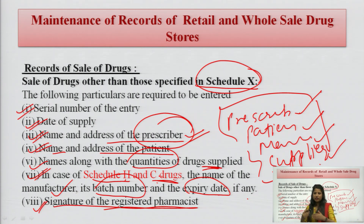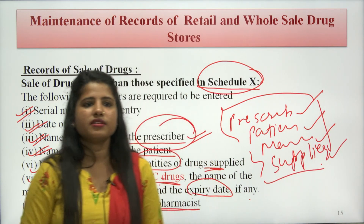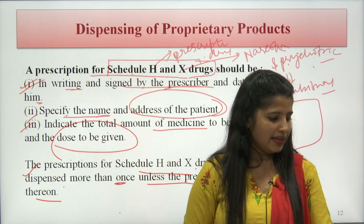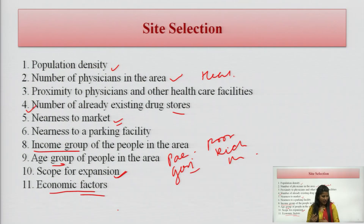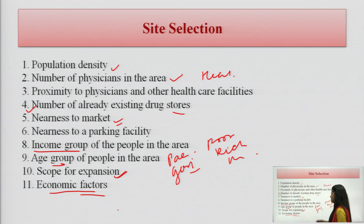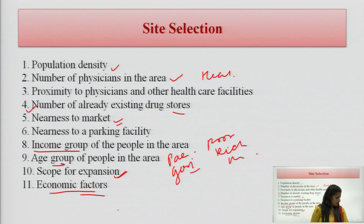In this whole session, we have discussed what is the drug store, what is the site selection criteria, how the drug store should be, and what the area should be. In site selection, the factors include population density, number of physicians, healthcare centers, existing drug stores and competition, parking facility, traffic, and age group — pediatric and geriatric populations.